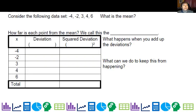So first of all we're going to take a look at this set of data. I have it up here negative 4, negative 2, 3, 4, and 6 and they're also in this table below.